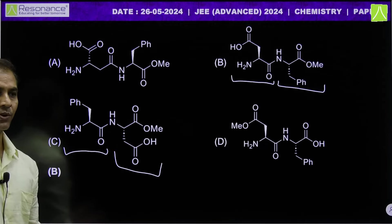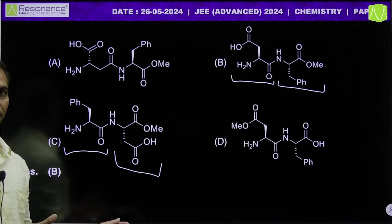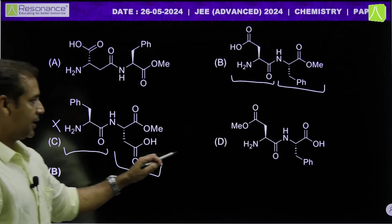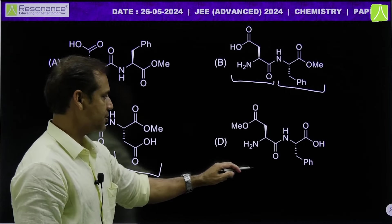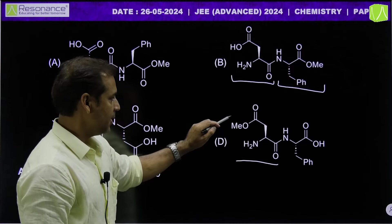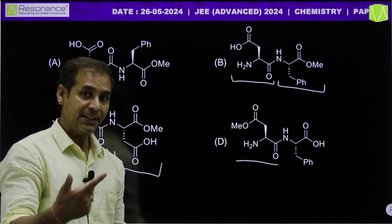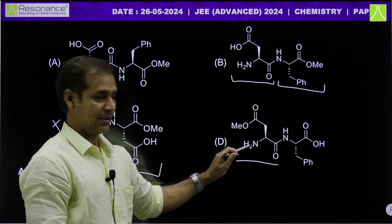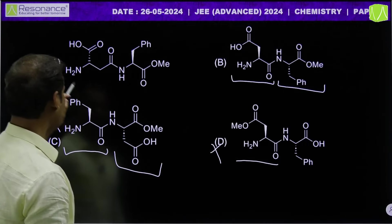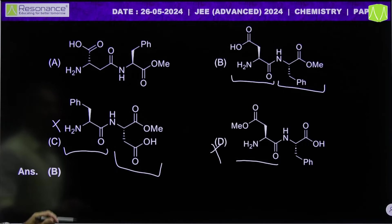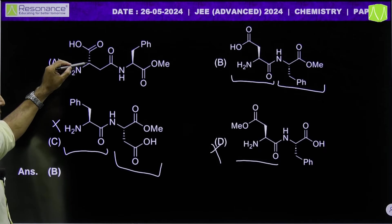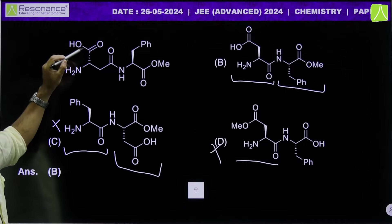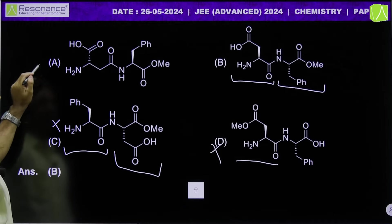Aspartame's IUPAC name is aspartyl phenylalanine methyl ester, so that option is correct. In option D, phenylalanine methyl ester should be made, and then aspartic acid methyl ester — that is also correct. Option A is wrong because the alpha carbon COH of aspartic acid is not given correctly.